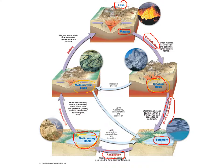If we take sedimentary or igneous rock and bury it deep in the Earth under tremendous heat and pressure, we call that process metamorphism, and the result is metamorphic rock. This is rock that's been twisted and tortured, and minerals have become unstable and recrystallized. It doesn't melt — if it melts all the way, we go back to lava or magma. We can melt any kind of rock and create lava or magma, and if that cools, we create igneous rock again.